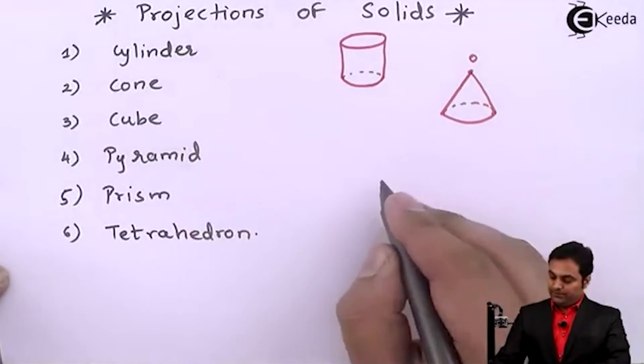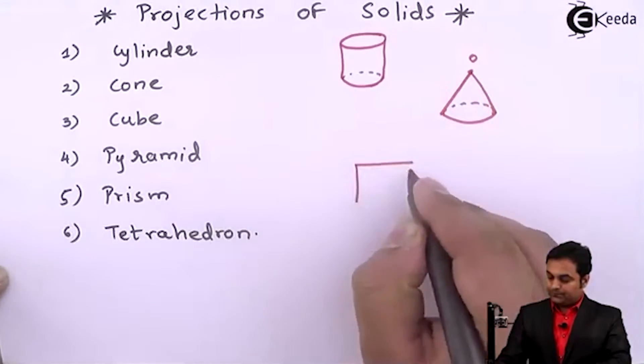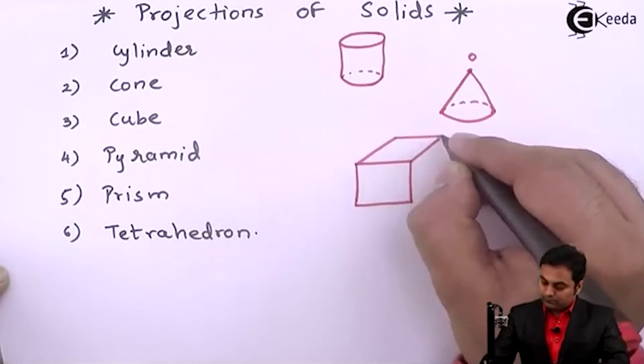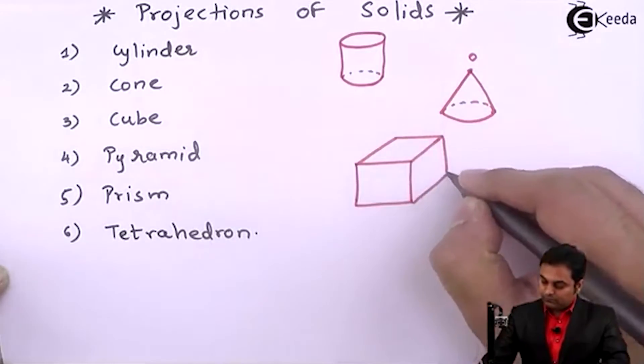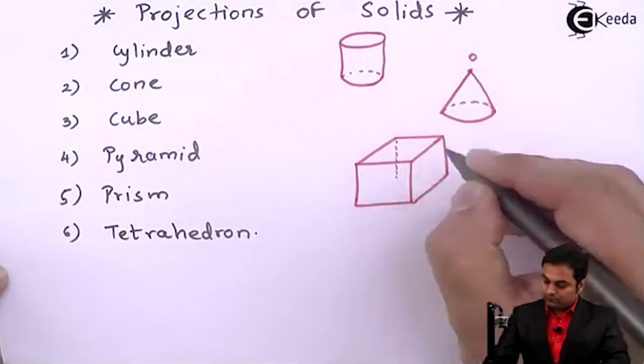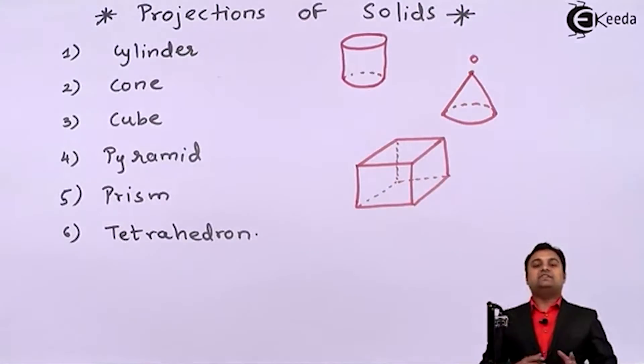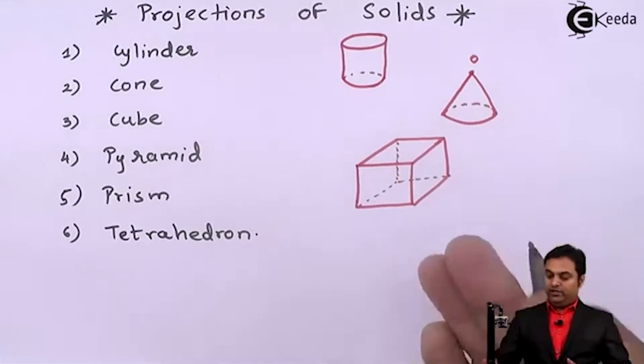Next there is cube which is having all its dimensions as equal, that is length, width and height are equal in case of cube. Next pyramid.